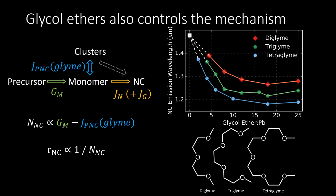A similar mechanism of action can be achieved by adding glycol ethers such as diglyme, triglyme, and tetraglyme. The former yields the smallest nanocrystals at reaction completion, matched with short pre-nucleation cluster reaction lifetime. The stronger potency of tetraglyme can be explained through its larger binding strength to the lead precursor, yielding smaller nanocrystals at reaction completion, consistent with a reduced Jpnc.